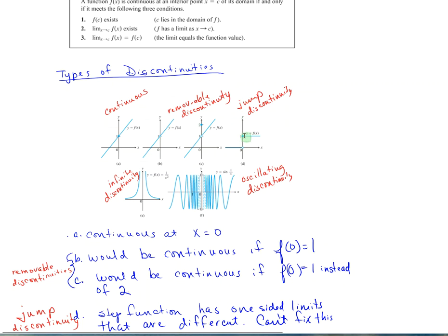Jump discontinuity, when you've got a break in it. This is this piece, this is this piece. Infinite discontinuity, there's a break and they're both going to positive infinity on either side. And then oscillating discontinuity, you have it up and down, up and down.